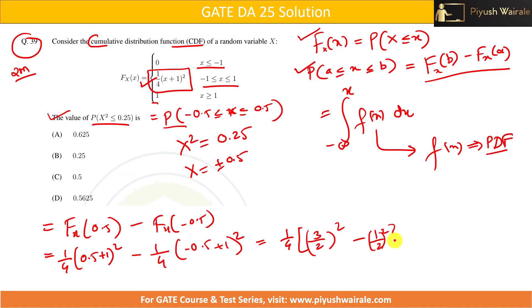That is basically 1 divided by 4, 3/2 is basically 9/4 minus 1/4, that is basically 8/4. That is basically 0.5. So you can see the correct option is option number C, 0.5. Simple question for two marks. You just need to understand the property of this CDF.